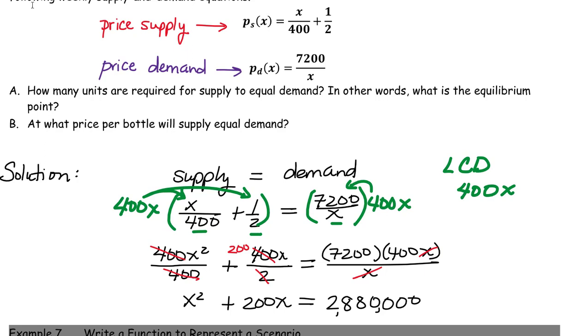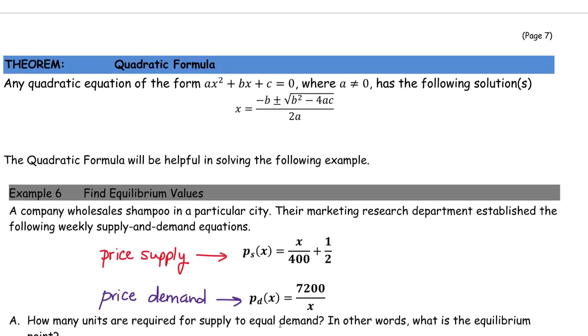All right, now you might recognize that now we have a very specific kind of equation, a common type of equation, called a quadratic equation. And there are many approaches to solving quadratic equations, but in general, you want to get them in what's called standard form, meaning getting equal to zero on one side. And then one possibility is to use the quadratic formula. So I want to remind you what that is.